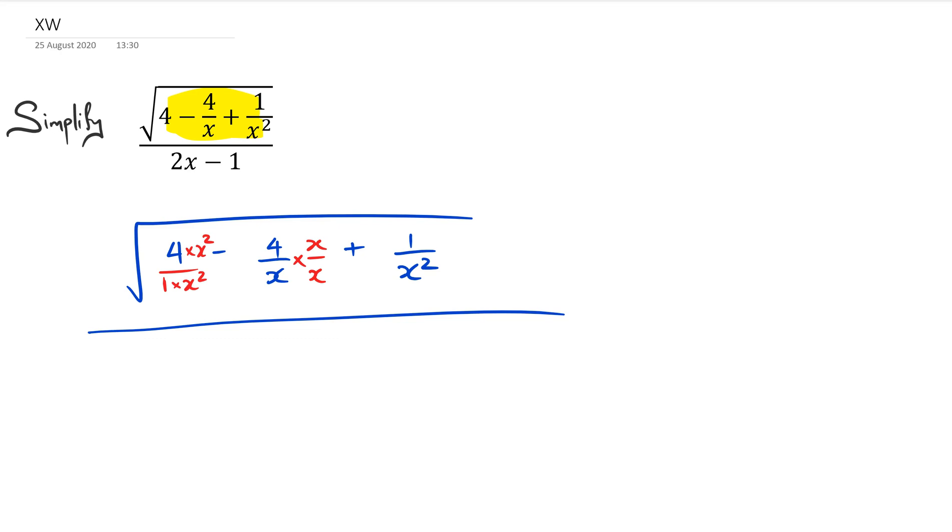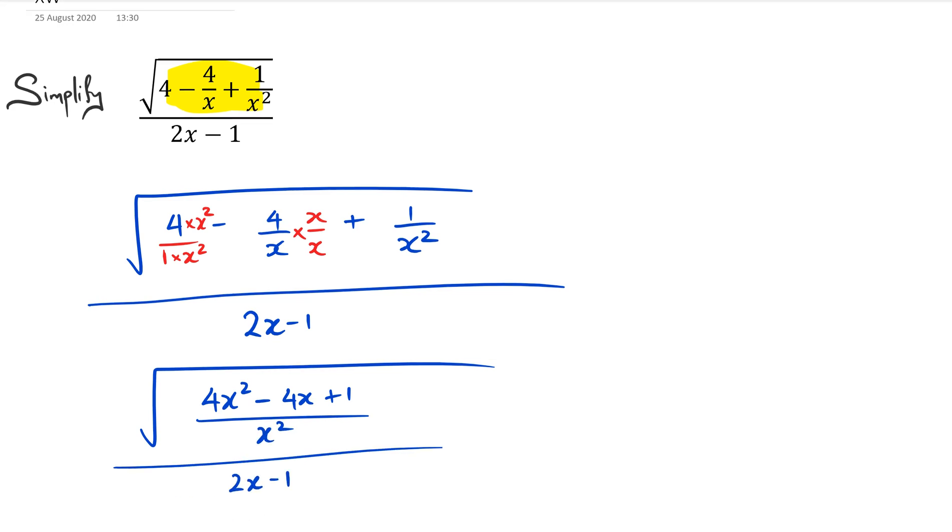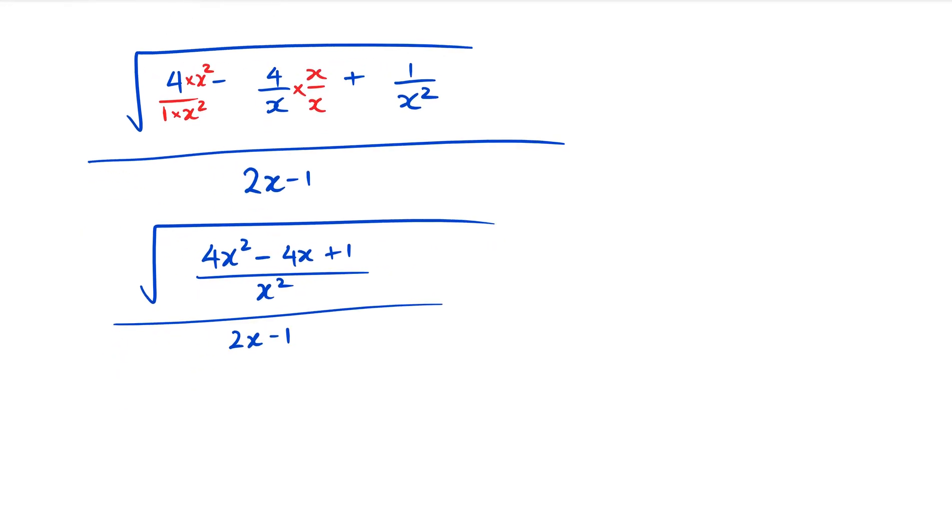When I do this, what I end up with is the square root of 4x² - 4x + 1, and all of it has the same x² as its denominator. That's all now divided by 2x - 1.